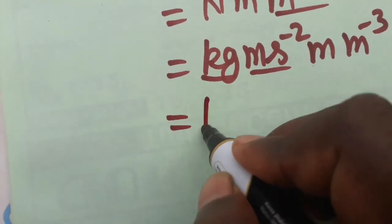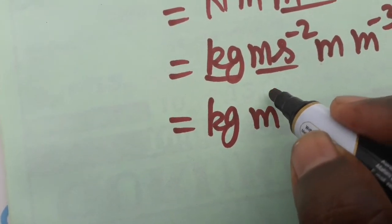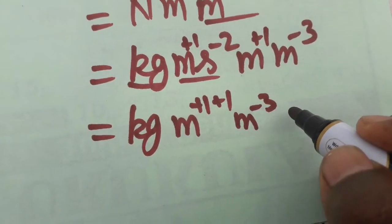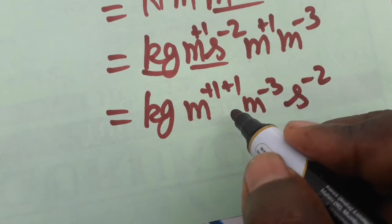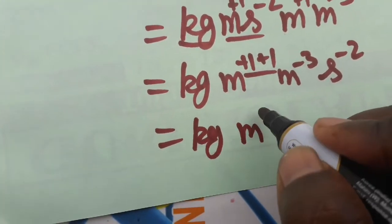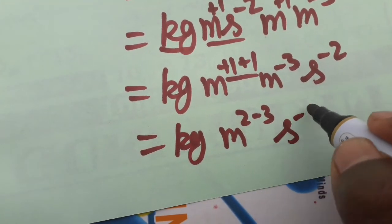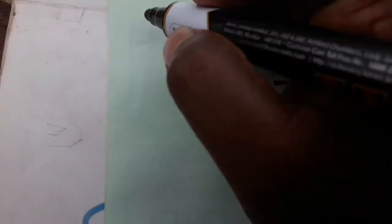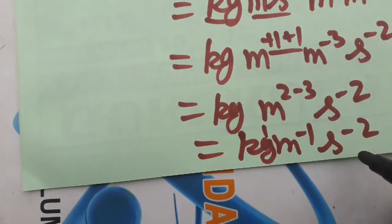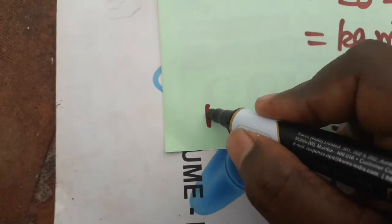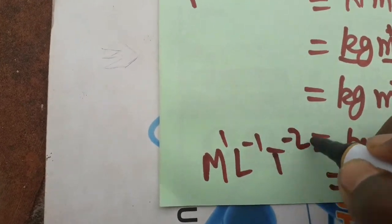Combining all the meter terms: meter¹ + 1 + 1 − 3 = meter⁻¹, and second⁻². So the final SI unit is kg × meter⁻¹ × second⁻², which gives the dimensional formula M¹ L⁻¹ T⁻².